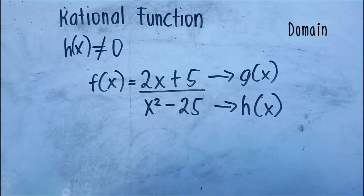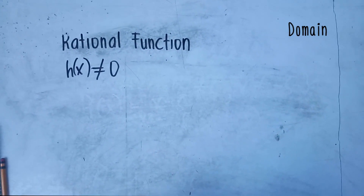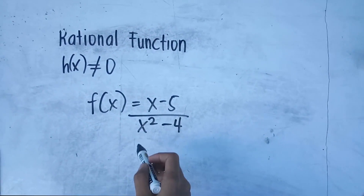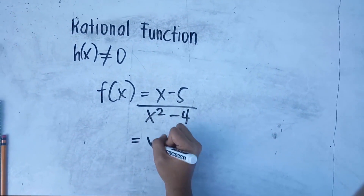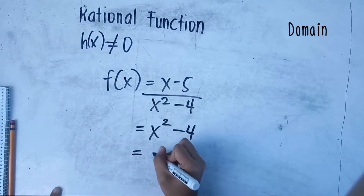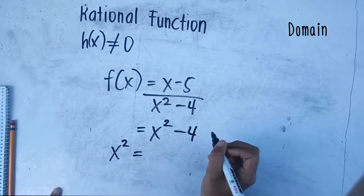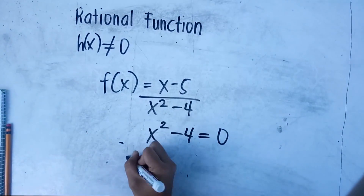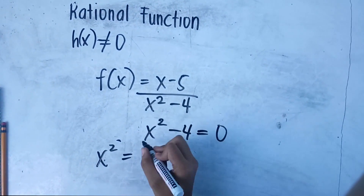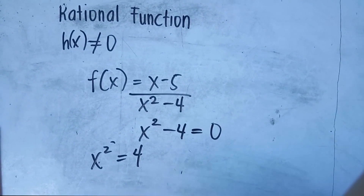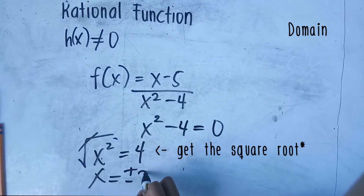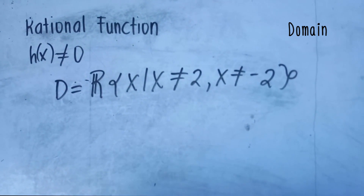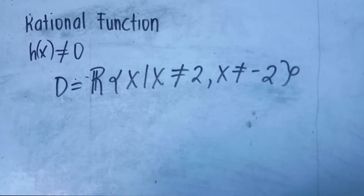To find the domain of f of x equals x minus 5 over x squared minus 4, we take the denominator x squared minus 4 and equate it to zero. Solving: x squared equals 4, so x equals positive or negative 2. Therefore, the domain is all real numbers x such that x cannot equal positive 2 and x cannot equal negative 2.